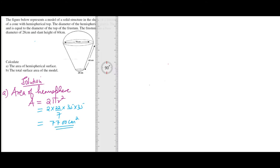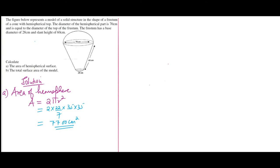So let's proceed to the second part of the question. We are required to calculate the total surface area of this model. This model is composed of three surfaces: the hemisphere, the frustum (first term of a cone), and the circular bottom. We need to add the areas of all three to obtain the total surface area. We have already obtained the area of the hemisphere.